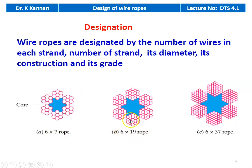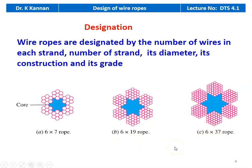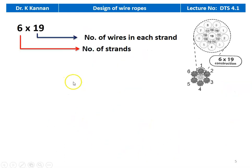For six by 19: there are again six strands and each strand has 19 wires — this is the six by 19 construction. And for six by 37: six strands, each with 37 wires. These are the three popular types of wire ropes used in material handling operations. In six by 19, six is the number of strands and 19 is the number of wires in each strand.